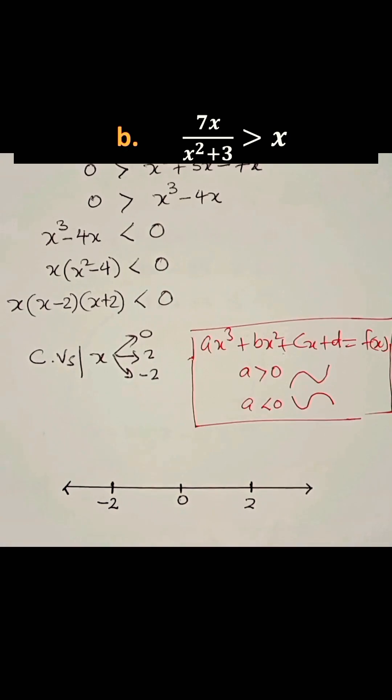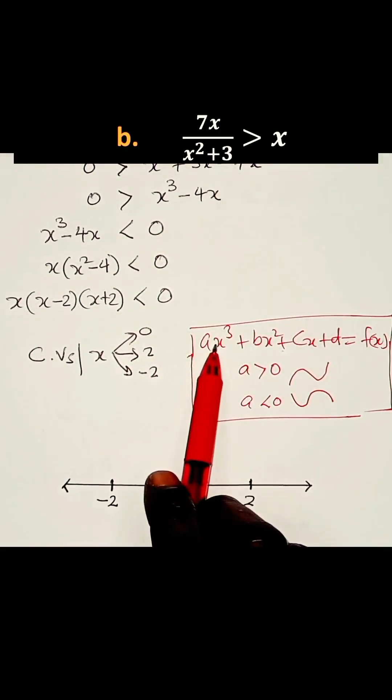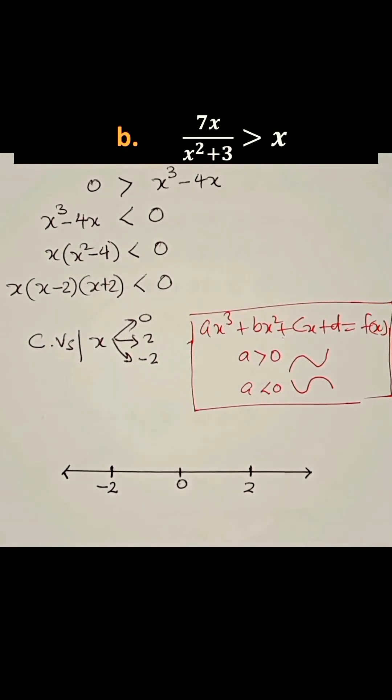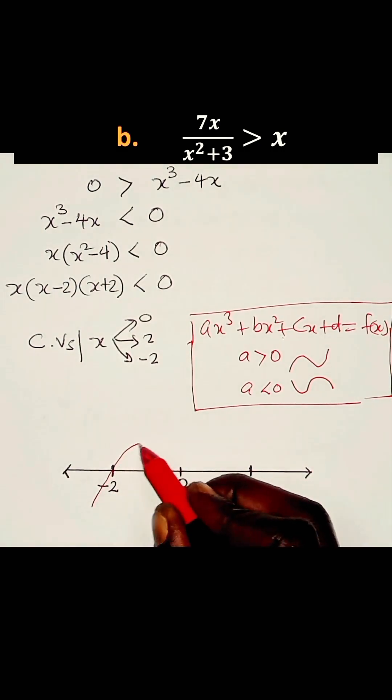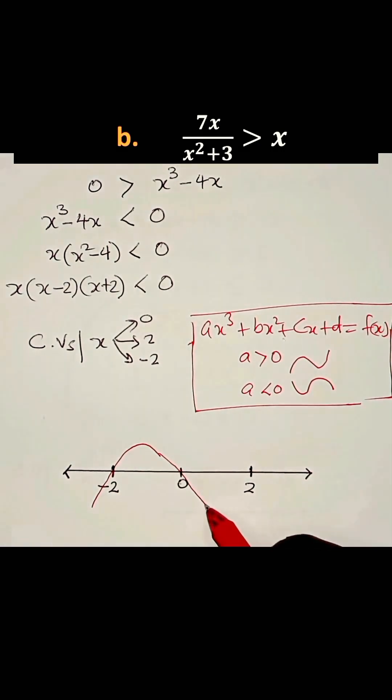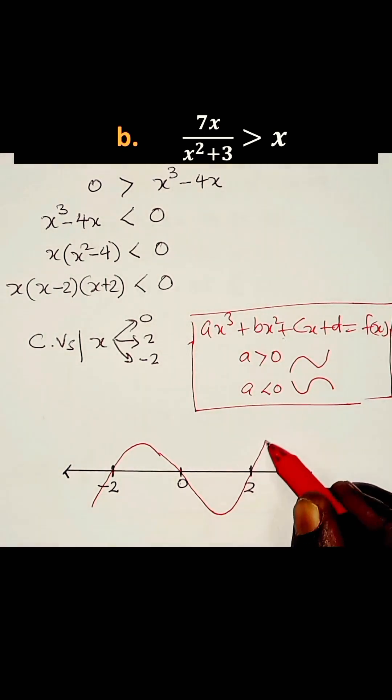Now we shall use that to sketch the graph. Since a is greater than 0 in this case, our graph will have this shape. It passes through 0, goes to a turning point, and passes through 2.